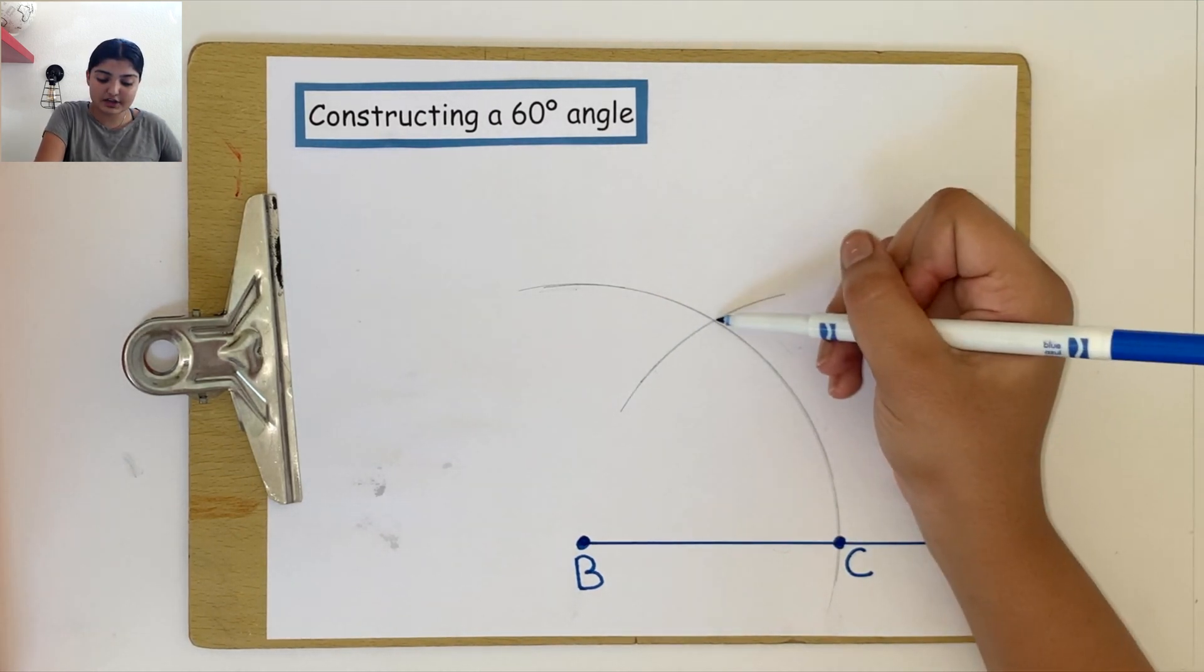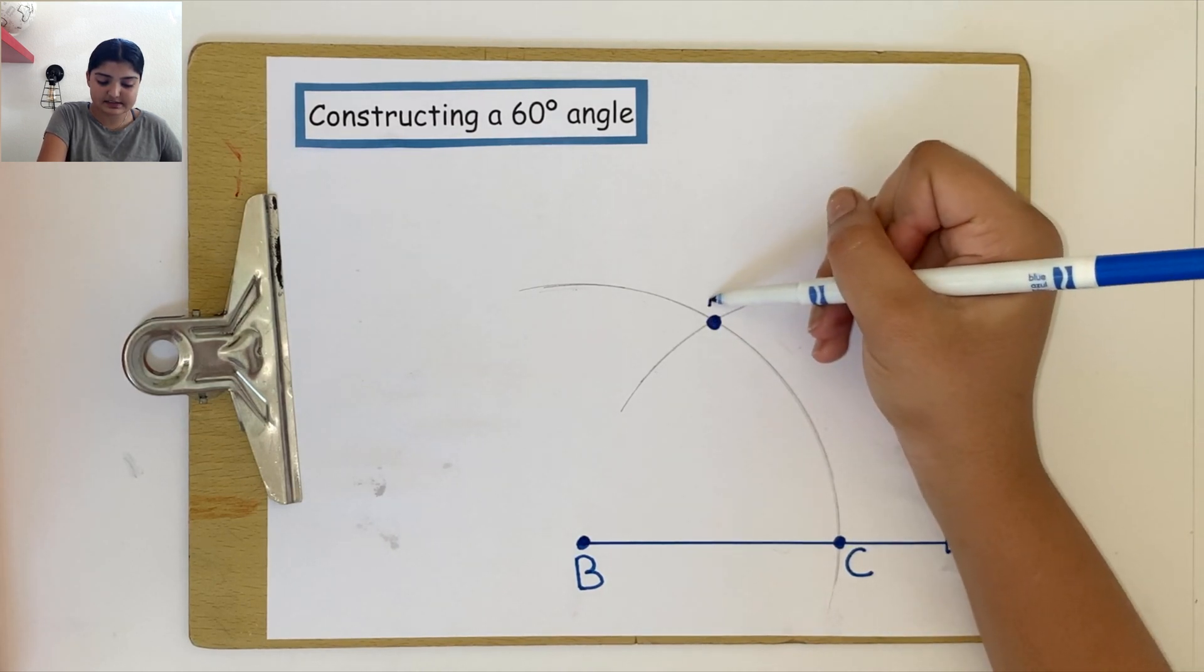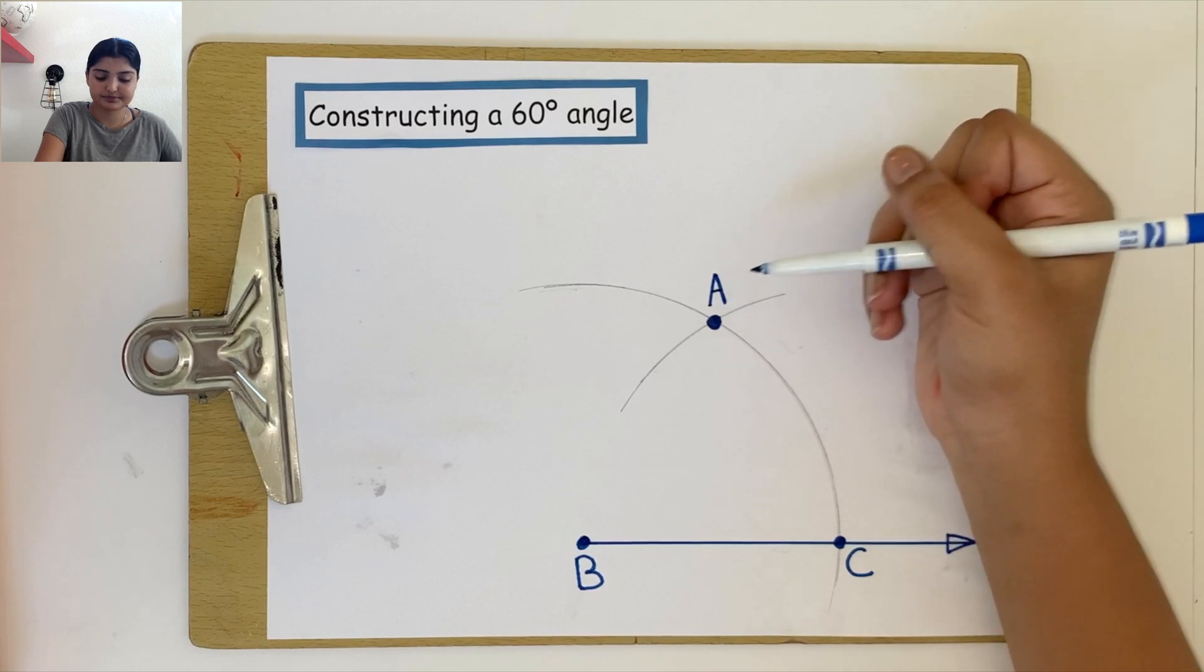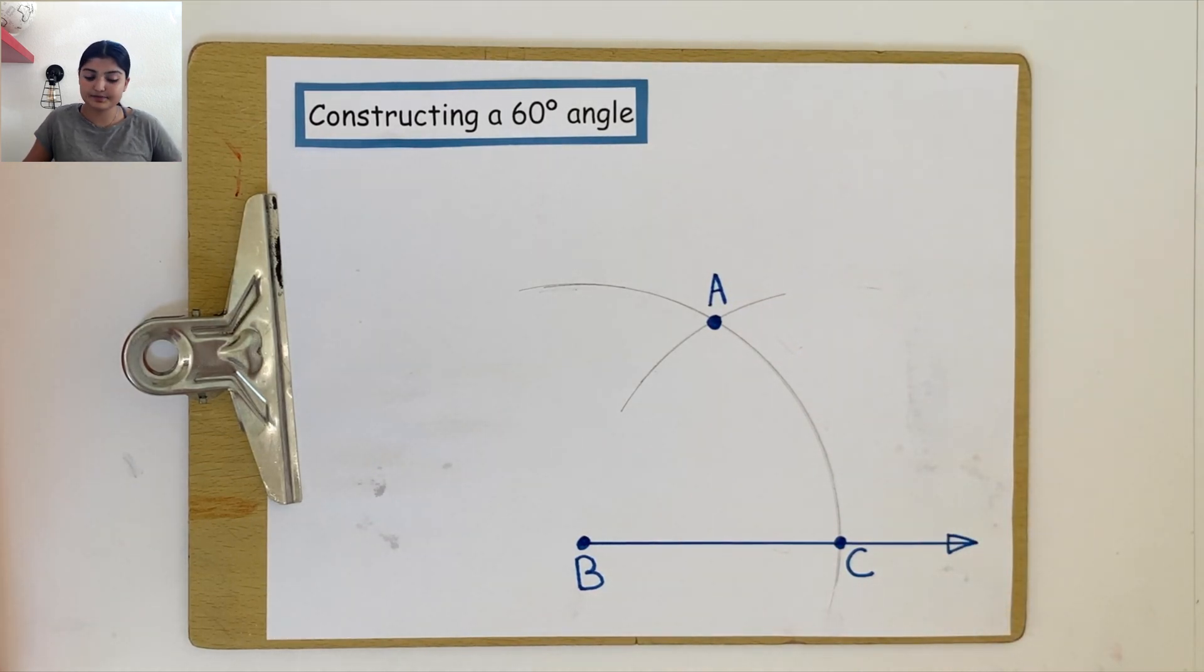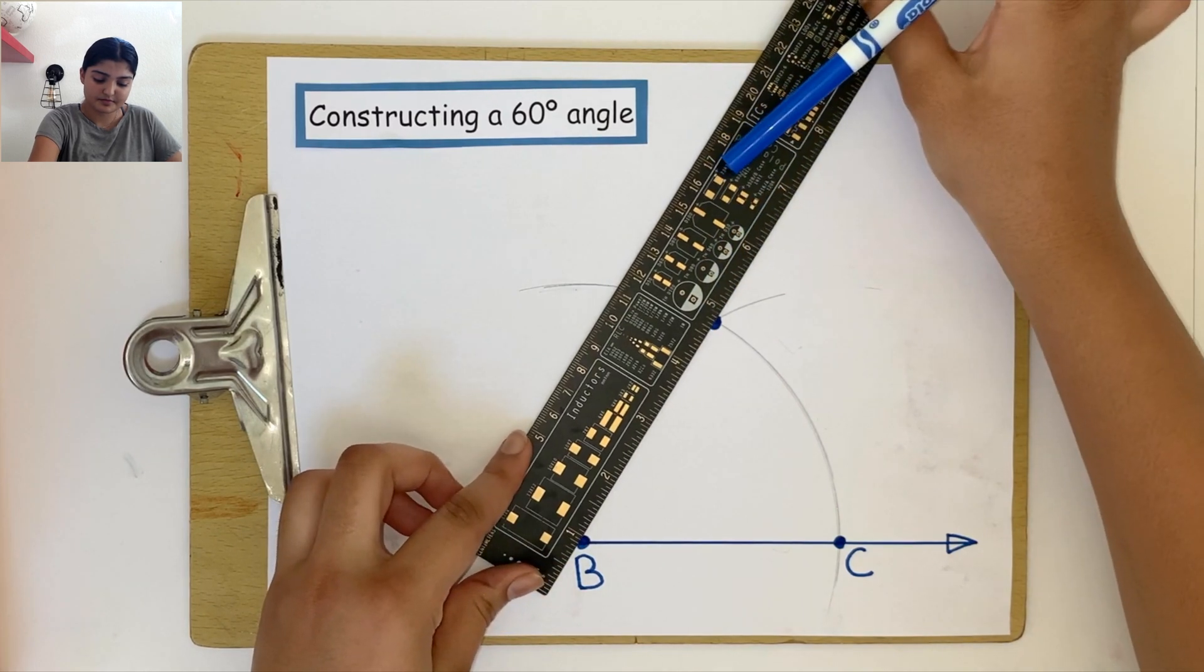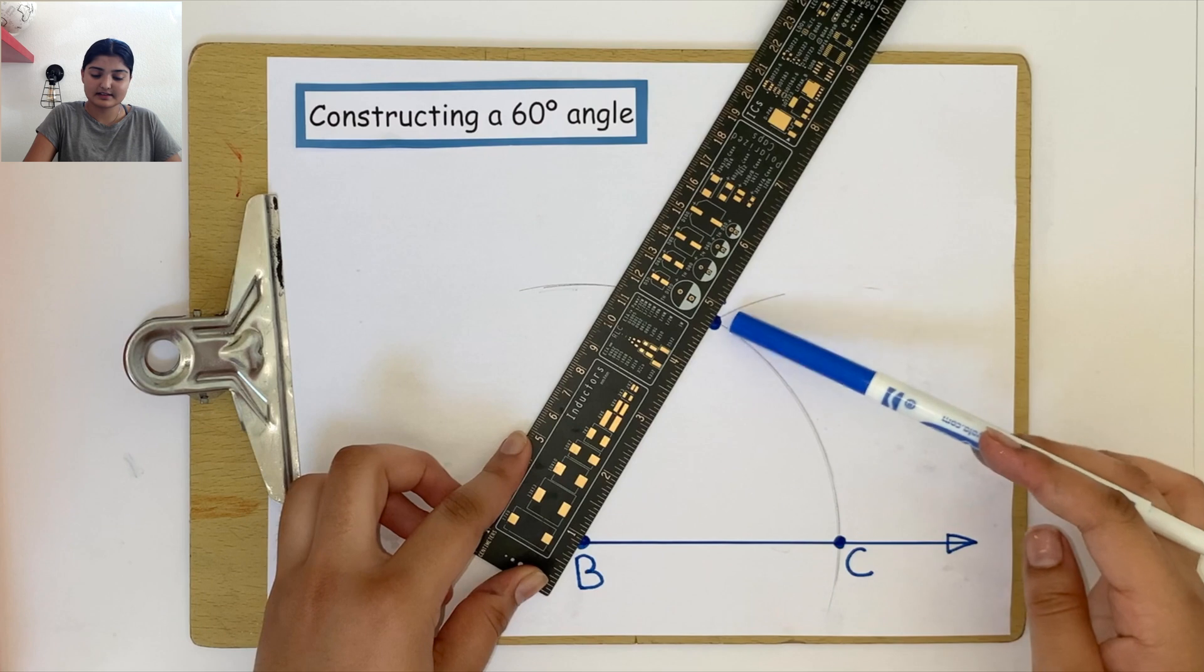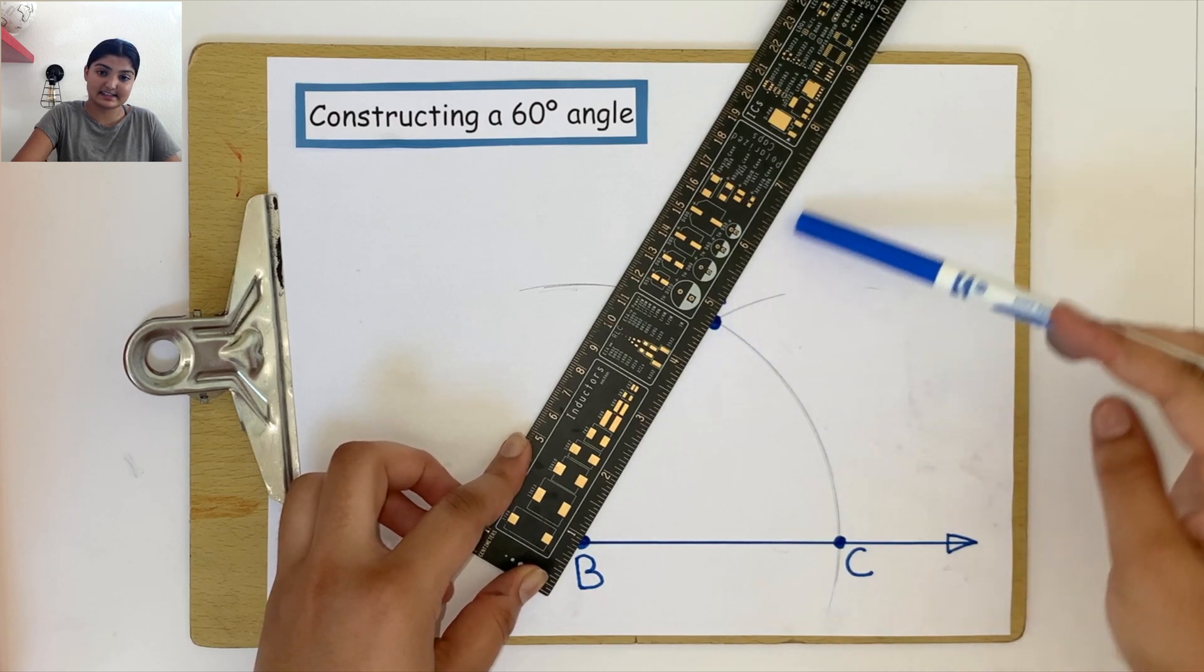We can draw another point at this intersection and label it as point A. Finally, draw a ray from point B to point A that extends.